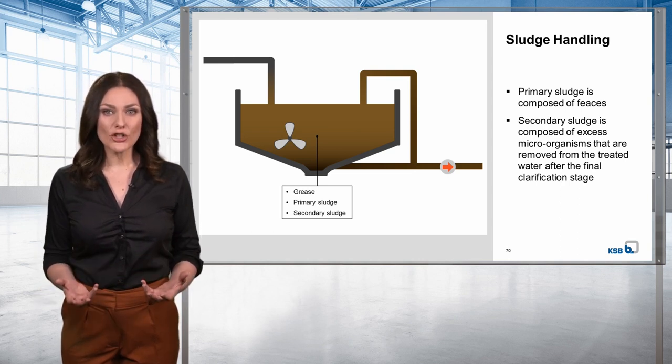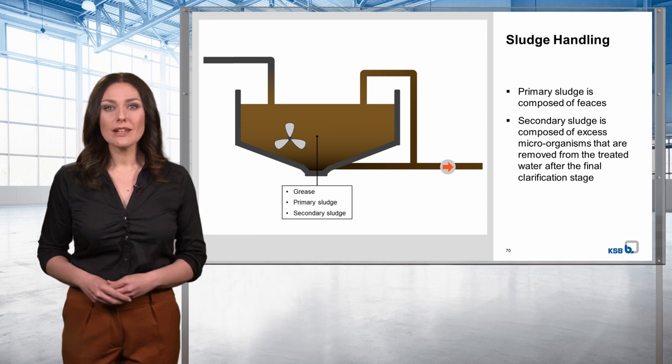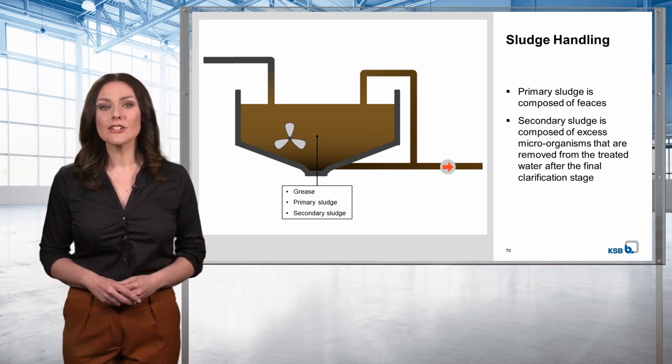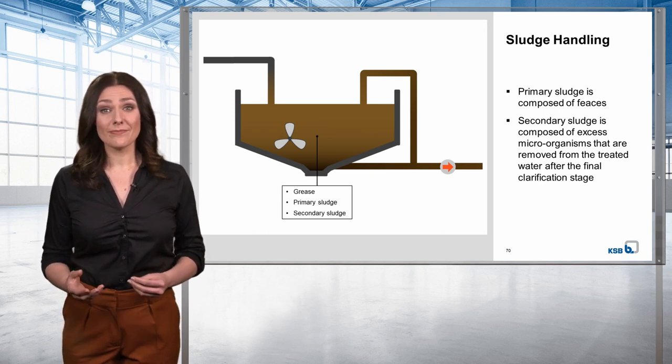In sludge treatment, water is removed from the sludges — the sludges thicken. The thickening process reduces the volume of the sludge to be treated and increases its dry solids content, abbreviated to DSC, for example from 1% to 3%.